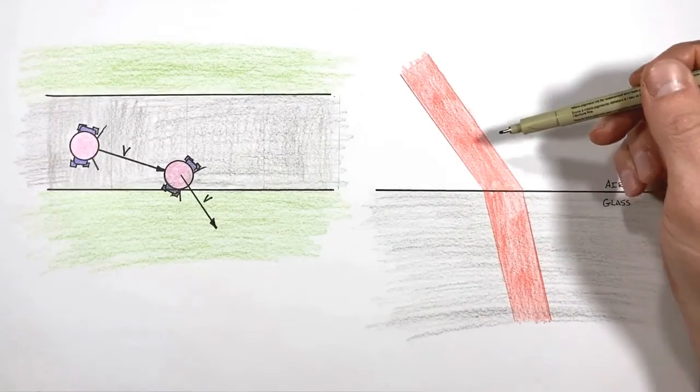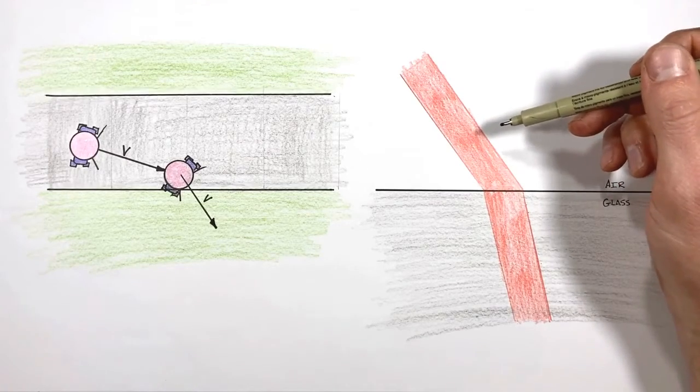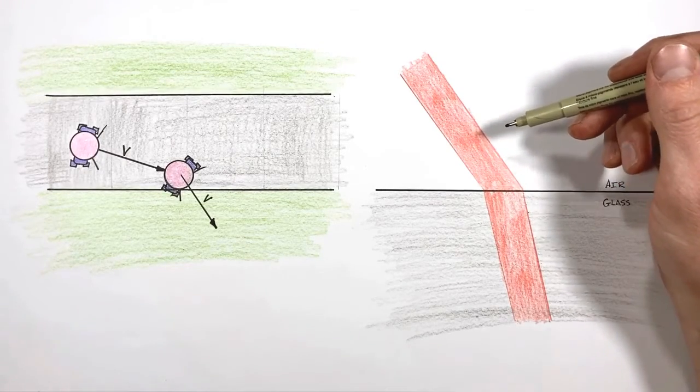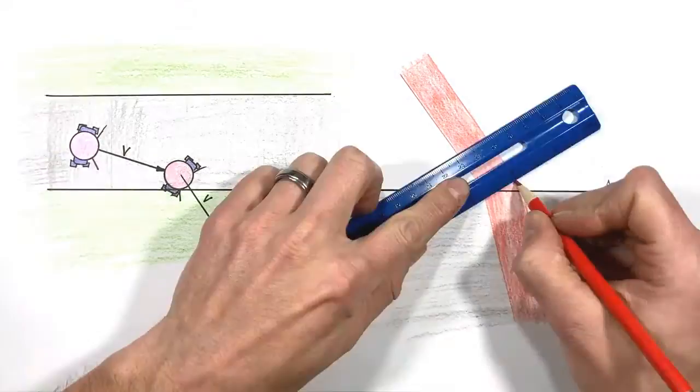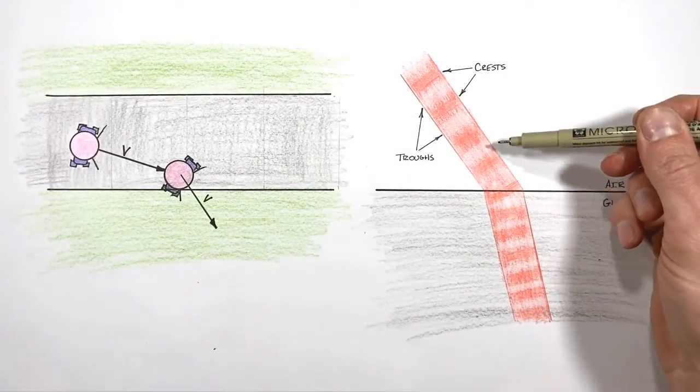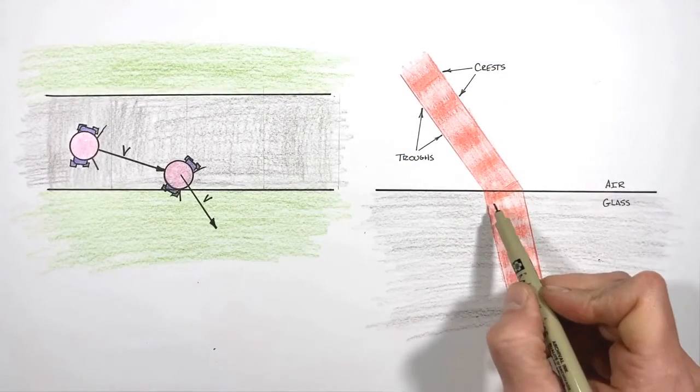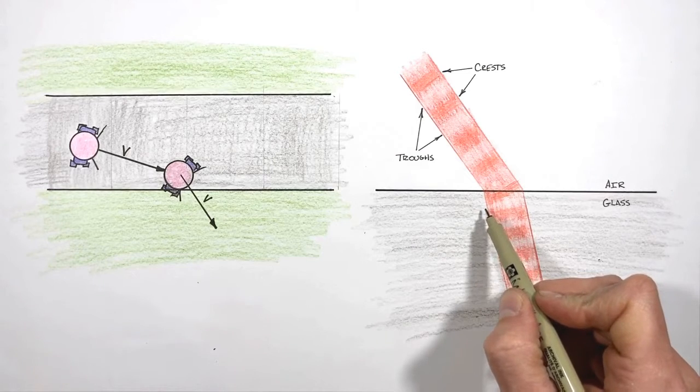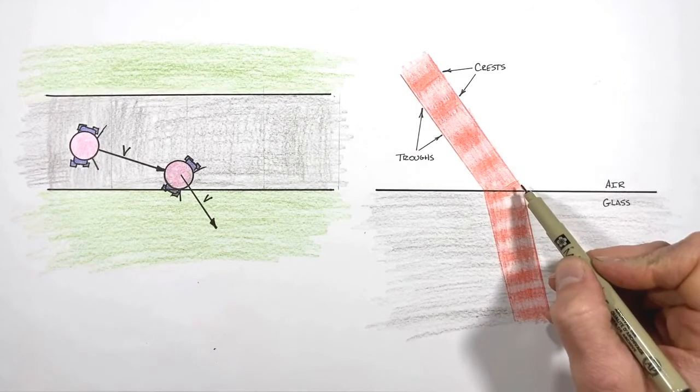Think of a ray of light not as a roller skating particle shooting through space, but as a wave which is made up of crests and troughs. Looking at the crest of the wave as it moves towards the glass, we can see part of the wave will pass into the glass and slow down before the rest of the wave front.